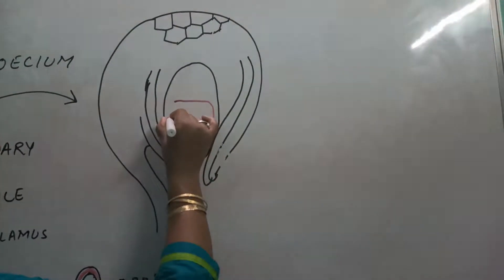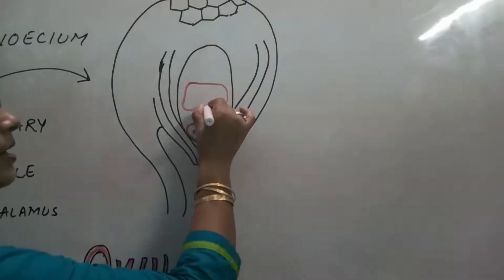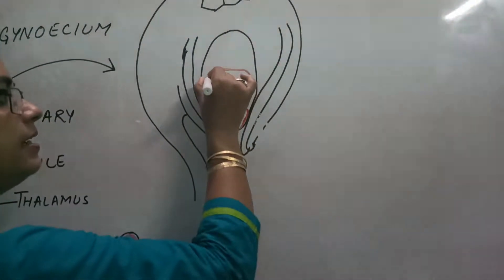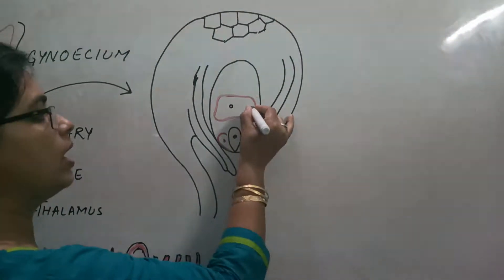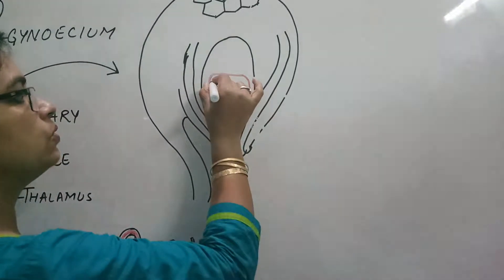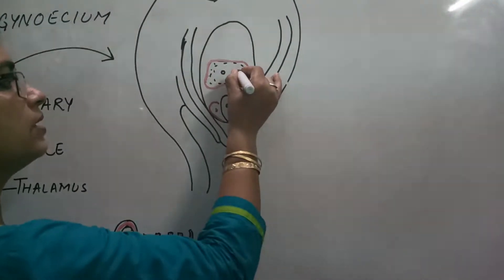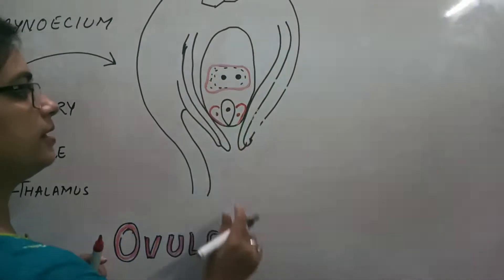This is the biggest cell inside this embryo sac. This is the biggest cell. And the central cell contains 2 nuclei: nuclei 1, nuclei 2, filled with the vacuolated cytoplasm. So there are 2 nuclei inside it.